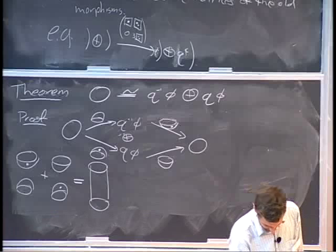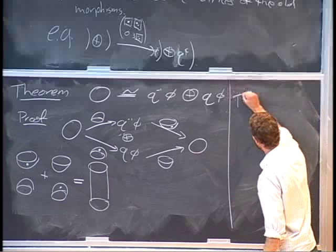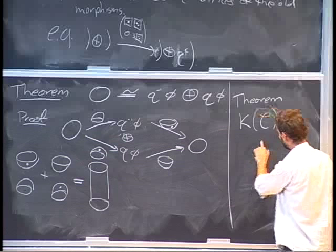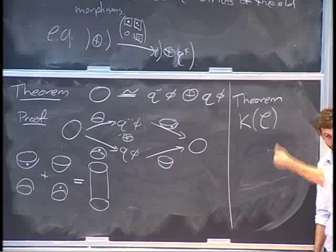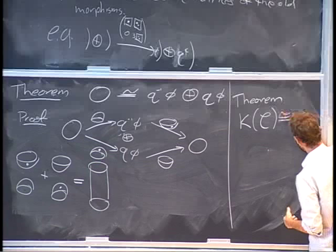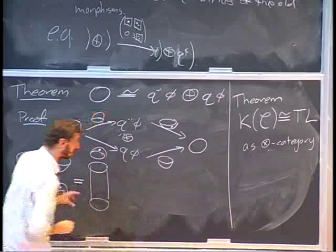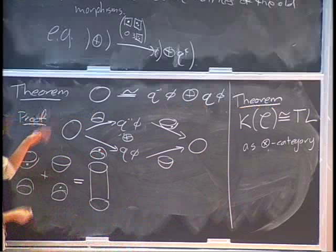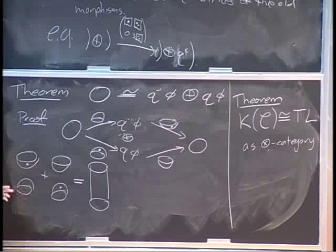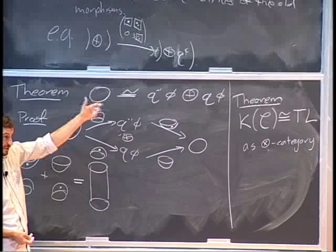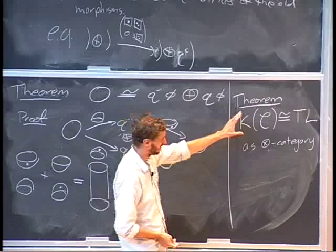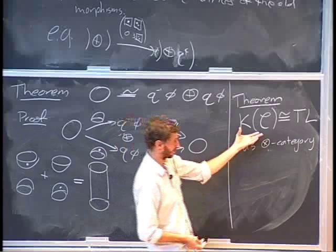As a theorem: taking the Grothendieck group of this category C — taking the Grothendieck group in each hom space hom from N to M — gives back Temperley-Lieb as a tensor category. So in some sense we've categorified Temperley-Lieb as a tensor category.